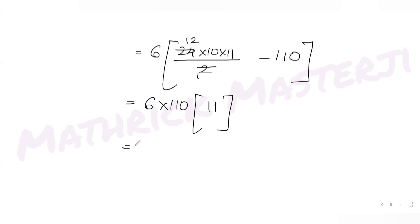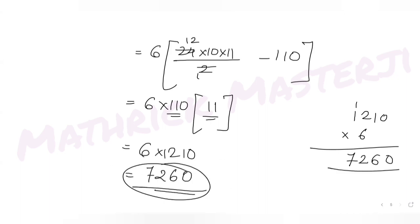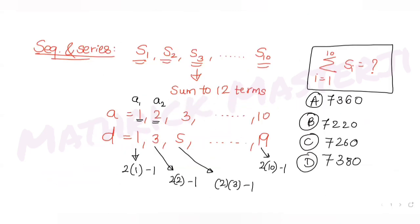We can factor out 110: 6 × 110 × (12 − 1) = 6 × 110 × 11 = 6 × 1210 = 7260. So the answer is 7260, which matches option C.